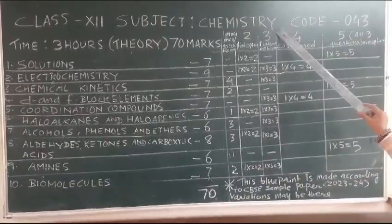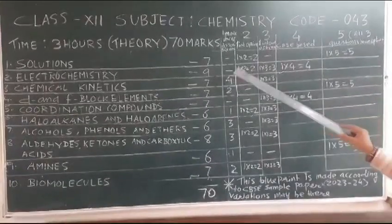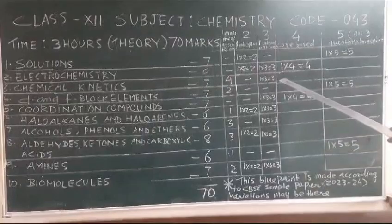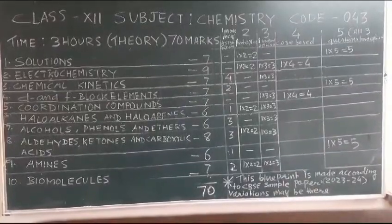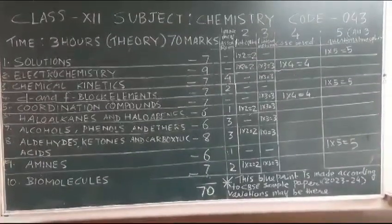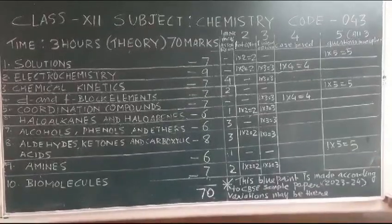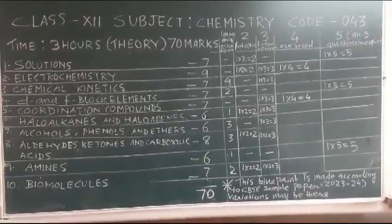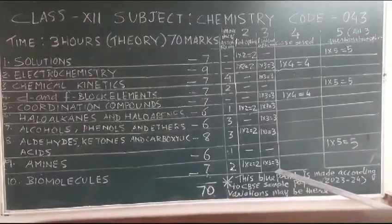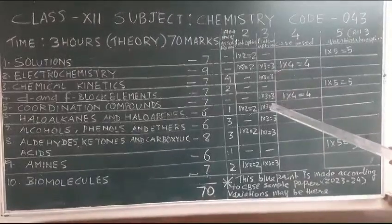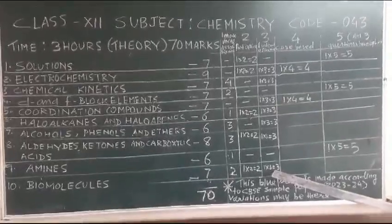Then comes 3 mark division. There will be only 1 internal option. Electrochemistry 1 question, Chemical Kinetics 1 question, then D and F block no 3 mark question, Coordination Compounds 1 question, Haloalkanes and Haloarenes 1 question, Alcohols Phenols 1 question, Aldehydes Ketones and Carboxylic Acid 1 question, Biomolecules 1 question. Total if you see, 1, 2, 3, 4, 5, 6 and 7, 21 marks will be allotted for 3 mark question.